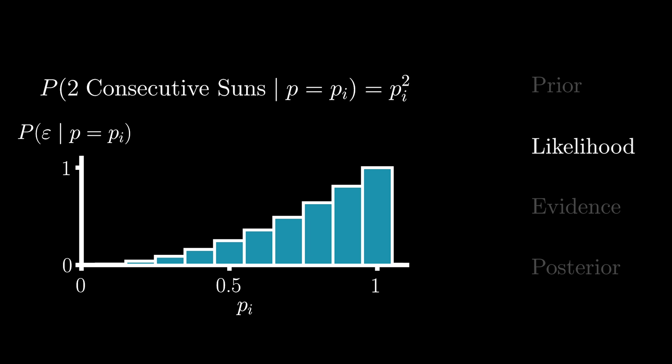We can now generalize this statement for any arbitrary value of p and plot the resulting likelihood function. Unsurprisingly, the value of p that maximizes the chance of observing two consecutive sunny days is p equaling 1. Now let's compute the probability of observing our evidence.